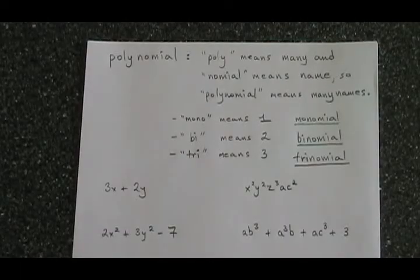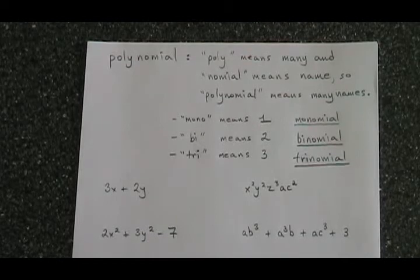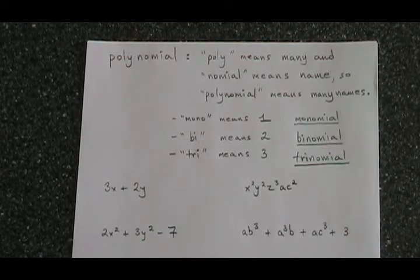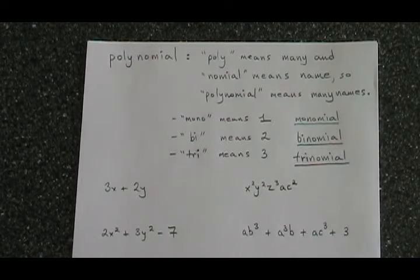In our high school polynomials course, we have to know the meaning of the word polynomial. Poly means many, and nomial means name, so the word polynomial means many names.